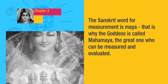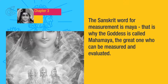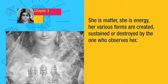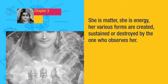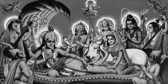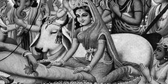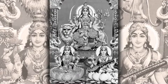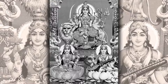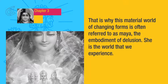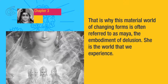The Sanskrit word for measurement is Maya. That is why the goddess is called Mahamaya — the great one who can be measured and evaluated. She is matter, she is energy. Her various forms are created, sustained, or destroyed by the one who observes her. When Narayana wakes up, the goddess is observed through the senses. She is classified using words, limited by thoughts, and measured with scales. Suddenly she is evaluated and judged. These forms, names, and evaluations enchant us, entrap us, delude us, stir our passions, make us happy and sad — because they are never still. That is why this material world of changing forms is often referred to as Maya, the embodiment of delusion.